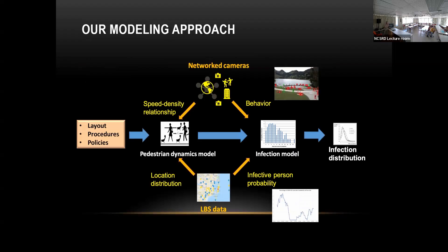A typical analysis follows: layout to pedestrian dynamics to infection to infection distribution. With network cameras, we can get additional information about behavior — things that impact the pedestrian dynamics model, like where people are congregating.